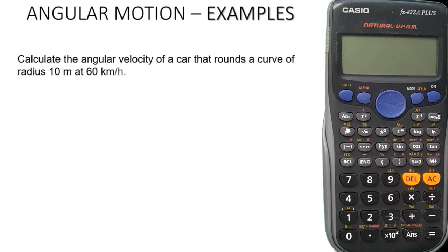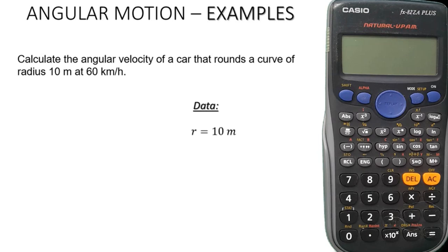Calculate the angular velocity of a car that rounds a curve of radius 10 meters at 60 kilometers per hour. Our data contains the radius, which is 10 meters according to the question, and also we have the velocity, which is 60 kilometers per hour.